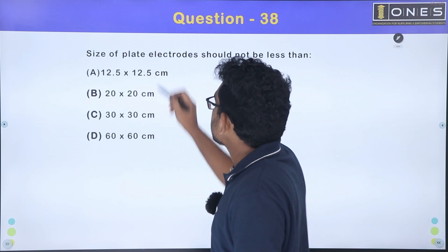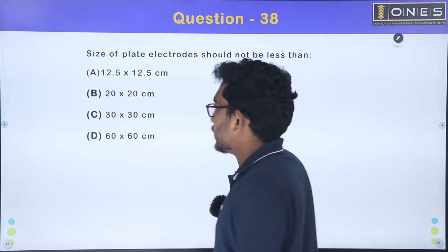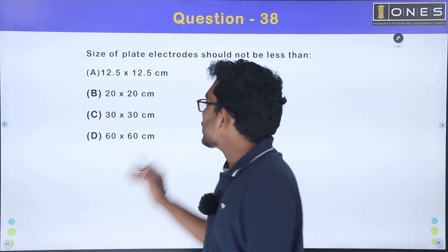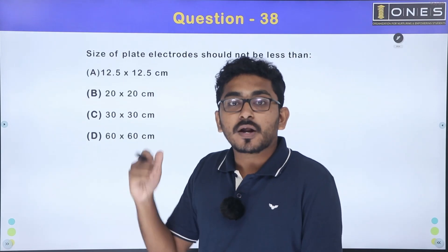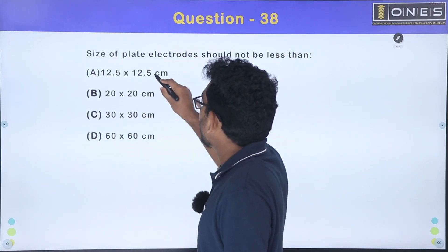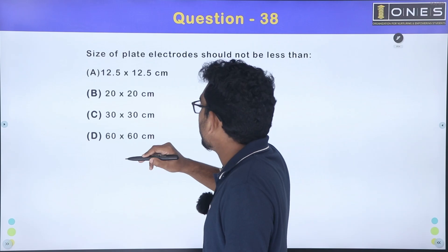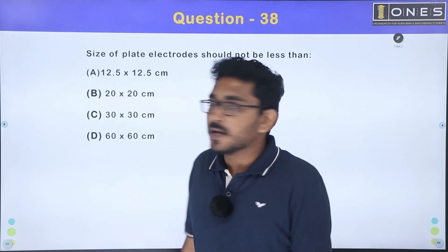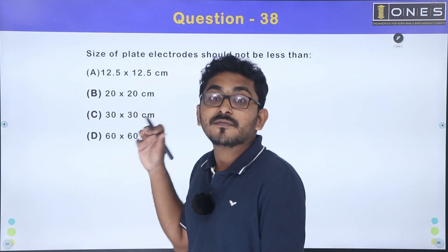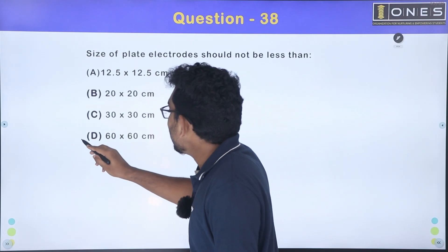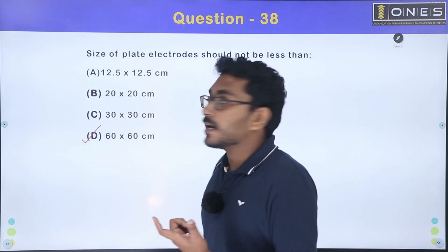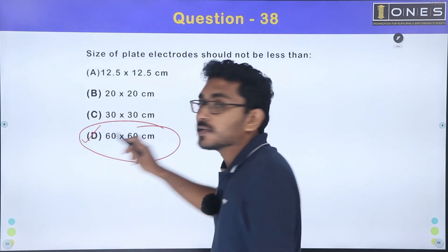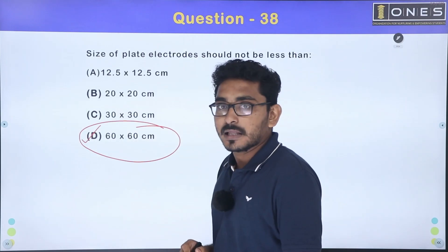Next question: the size of a plate electrode should not be less than what? The options are 12.5×12.5 cm, 20×20 cm, 30×30 cm, and 60×60 cm. Option B — 60×60 centimeter — is the correct answer for plate earthing electrode size.